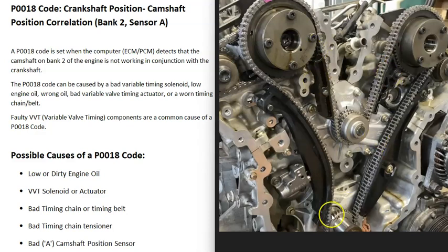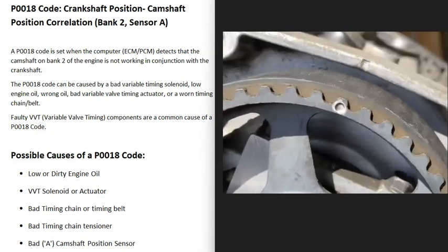These timing belts and timing chains all have timing marks on them, and all these marks need to line up. If the belt slips, or the timing chain slips, or if it gets stretched out and gets off, that's going to cause an issue and could cause a P0018 code. So the next thing on the list is a bad timing chain, timing belt, or the tensioner that holds them tight.